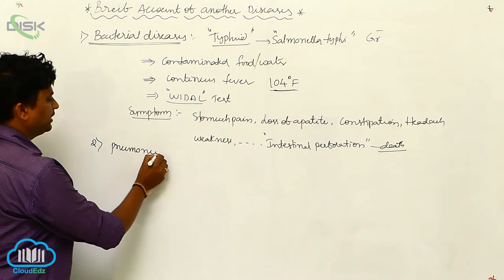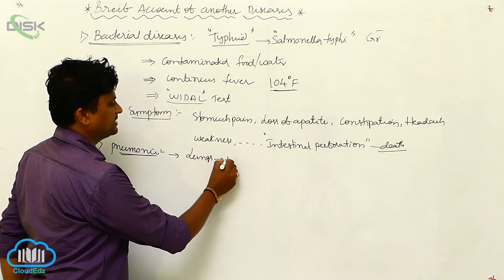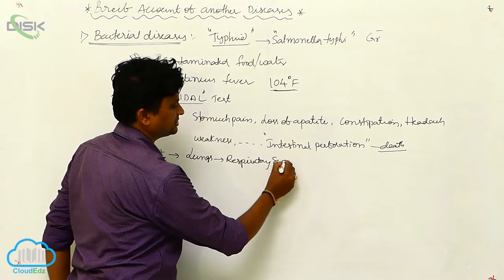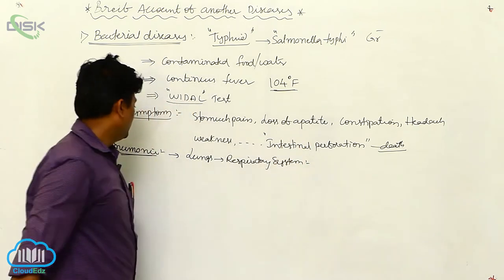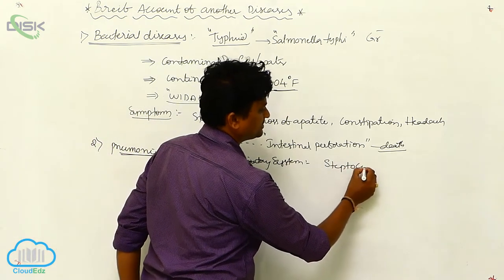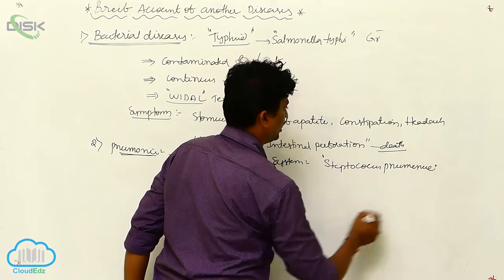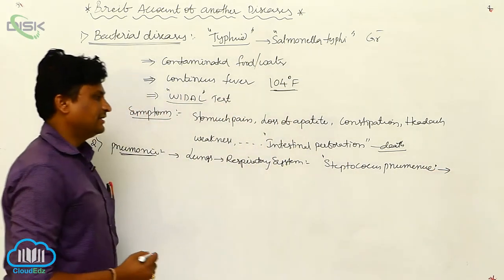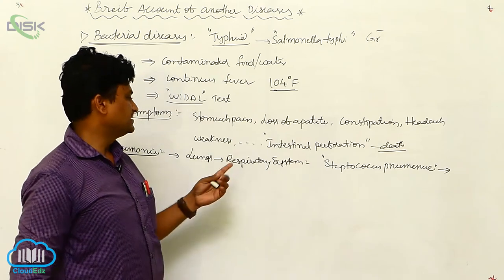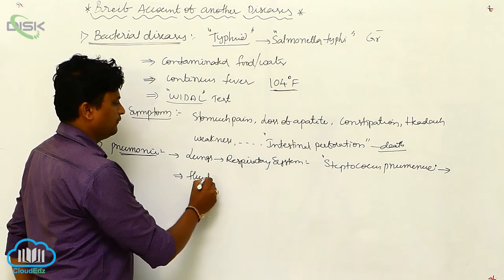The second bacterial disease is pneumonia, which highly infects the lungs and respiratory system. Pneumonia is caused by two bacteria: Streptococcus pneumoniae and Haemophilus influenzae.